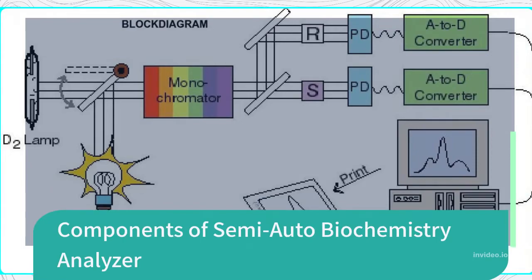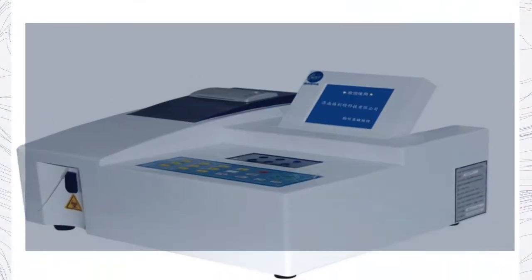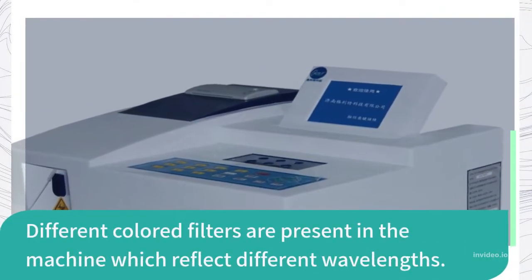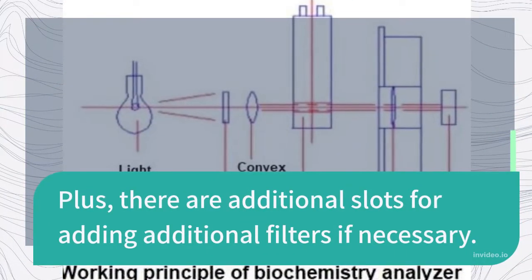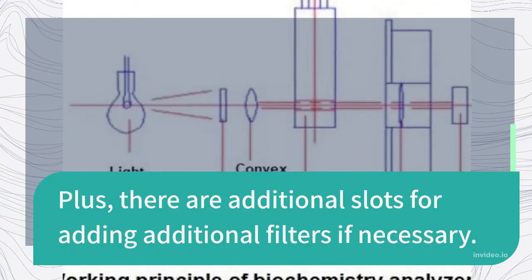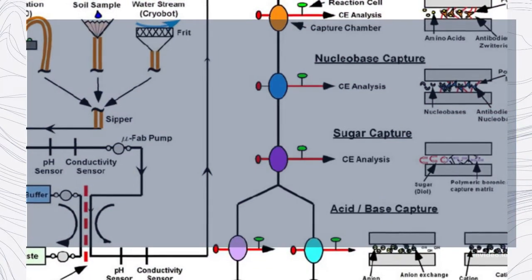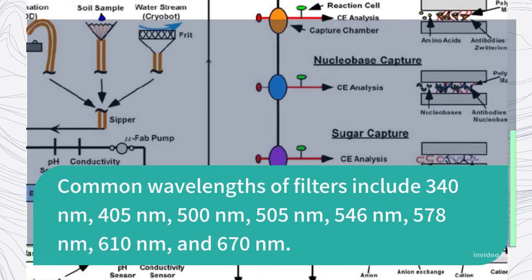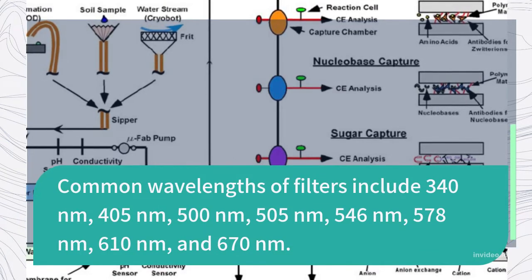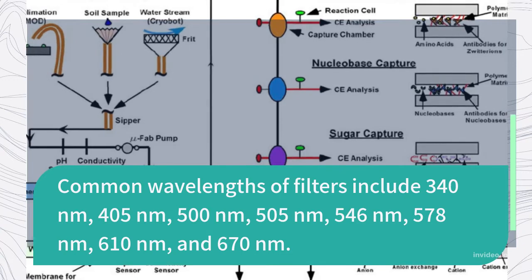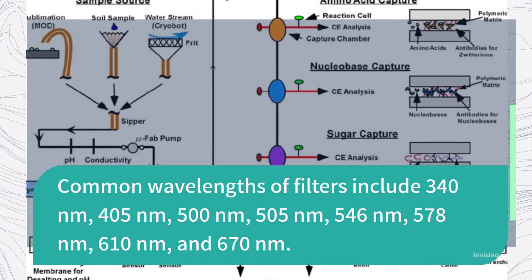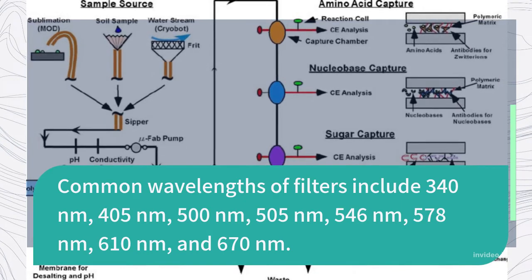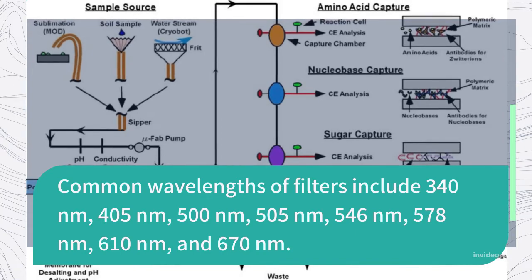Components of the semi-auto biochemistry analyzer include different colored filters, which reflect different wavelengths. There are 7 to 8 filters, plus additional slots for adding extra filters if necessary. Common wavelengths include 340 nm, 405 nm, 500 nm, 505 nm, 546 nm, 578 nm, 610 nm, and 670 nanometers.